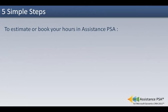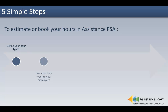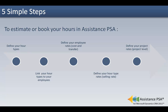In order to estimate and book hours in Assistance PSA, five simple steps must be done. First, define your hour types. Then, link these hour types to your employees. Next, define your employee rates — best practice is to enter a cost rate and a transfer rate. And, define your hour type rates — best practice is to enter a selling rate only. Finally, create your project rates should you have any specific ones, but remember that best practice is to define them as you create your projects.